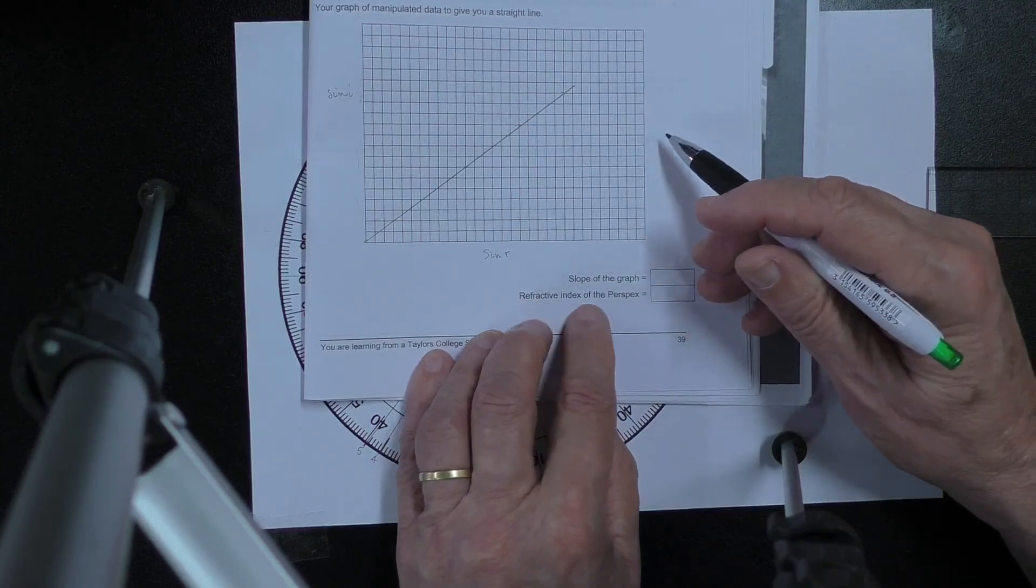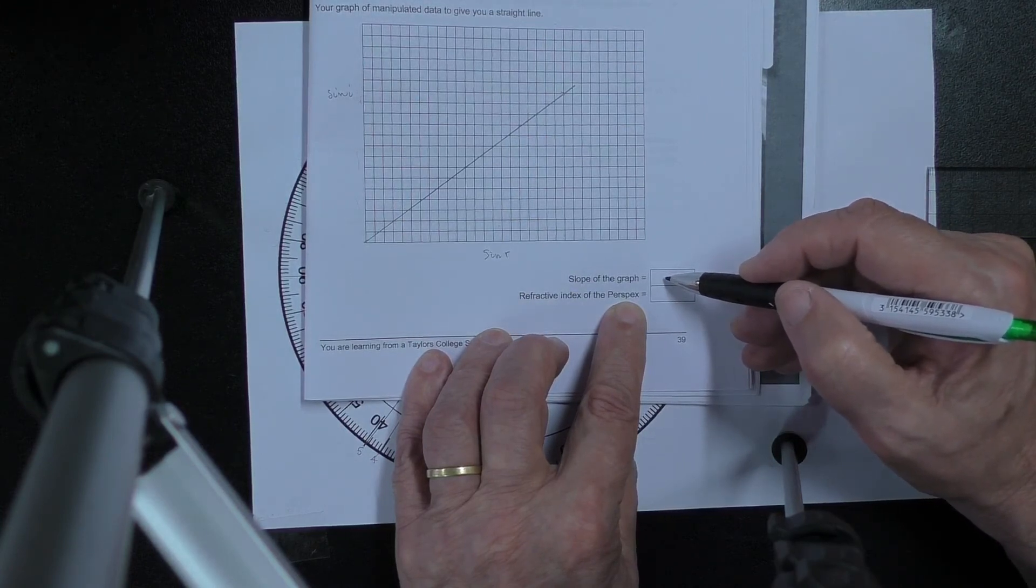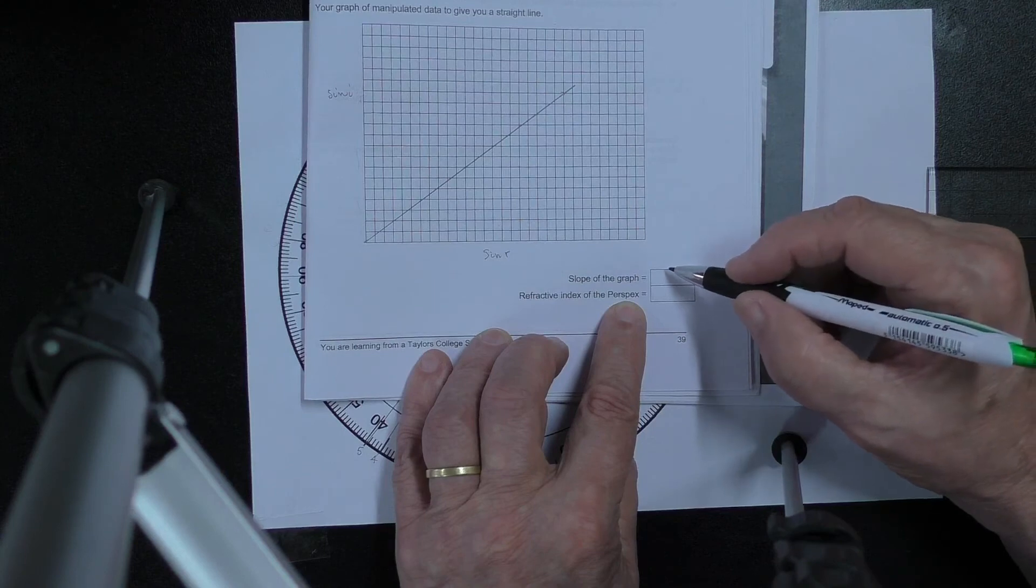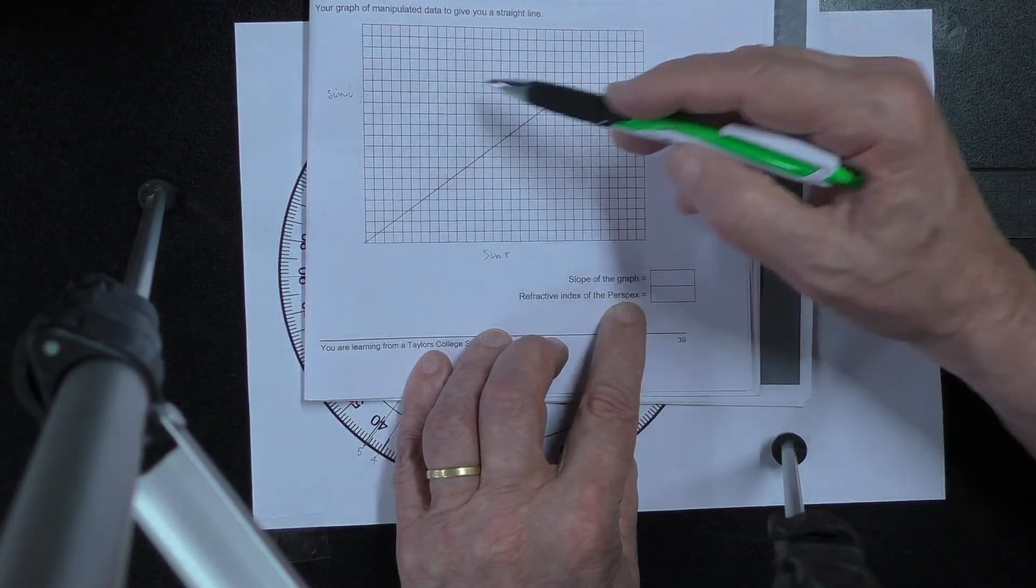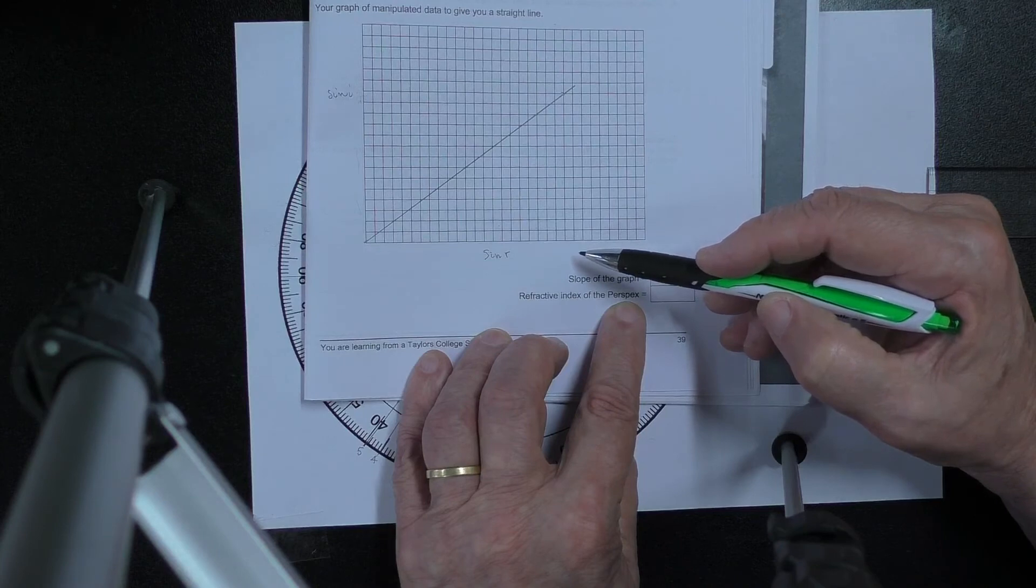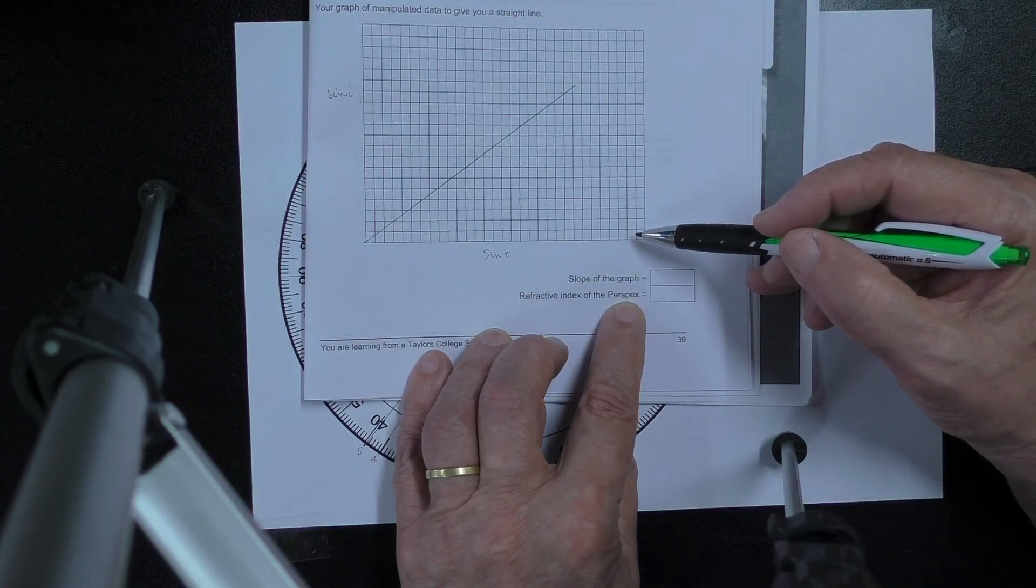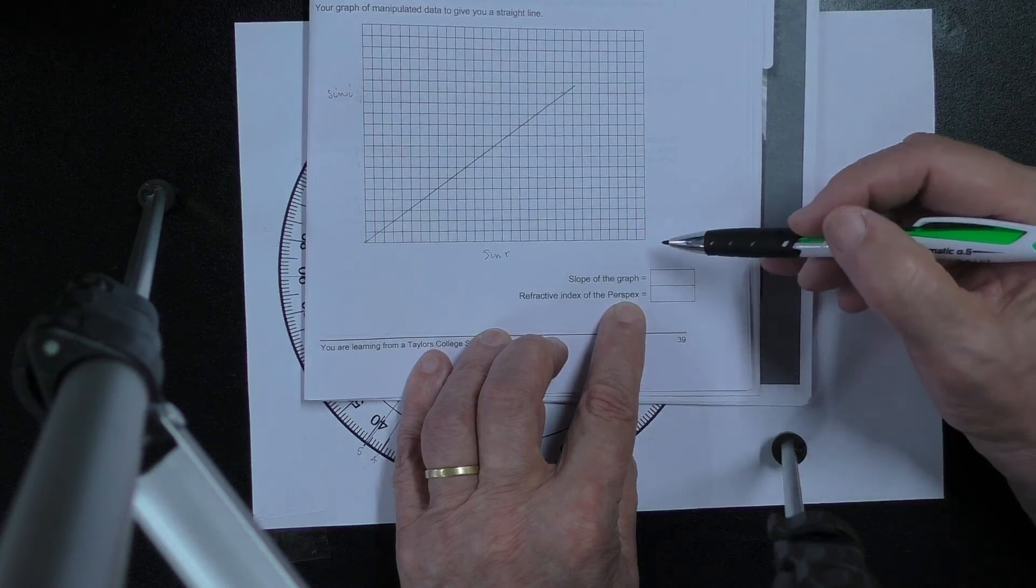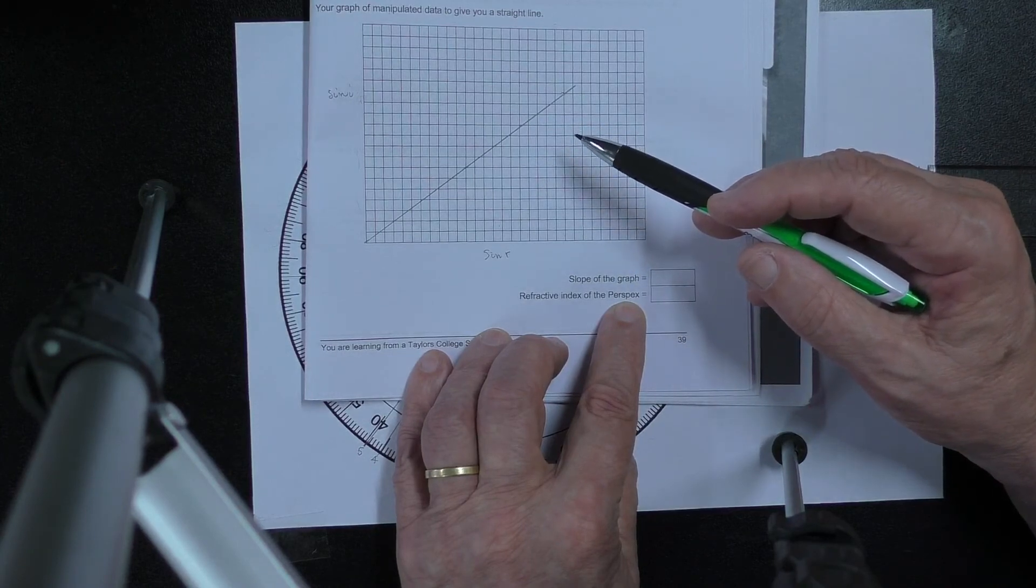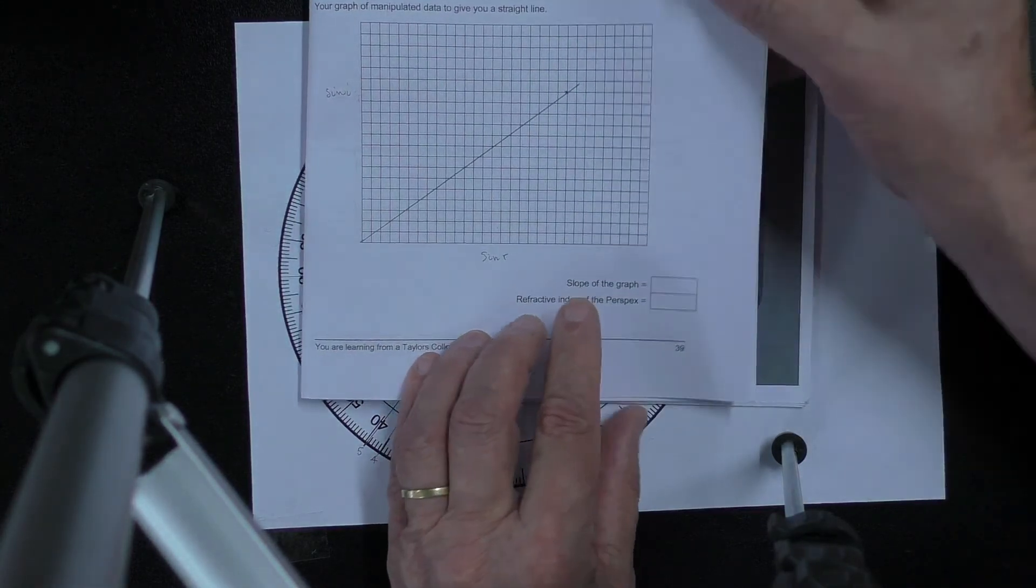Then it says the refractive index of the perspex, that is the same as the slope of the graph. This is the point of the exercise that we're trying to find the refractive index. The refractive index is the ratio of the sine of the angle of incidence to the sine of the angle of refraction. That was Snell's law. That number is a constant for any particular transparent substance like perspex. It would be different if we were using glass or diamond. They each have their own refractive index. You can then compare your results with what might be expected.